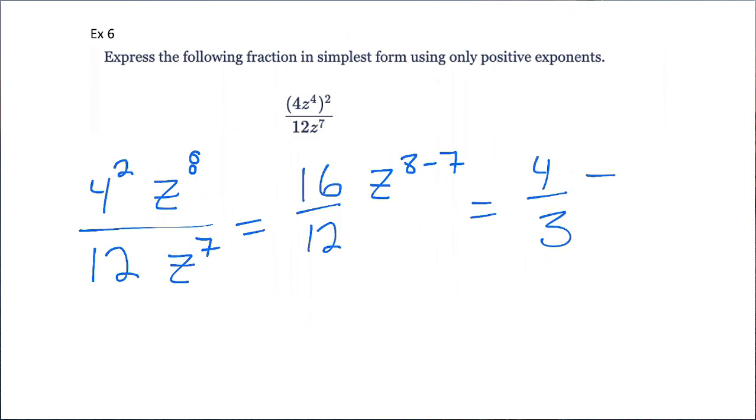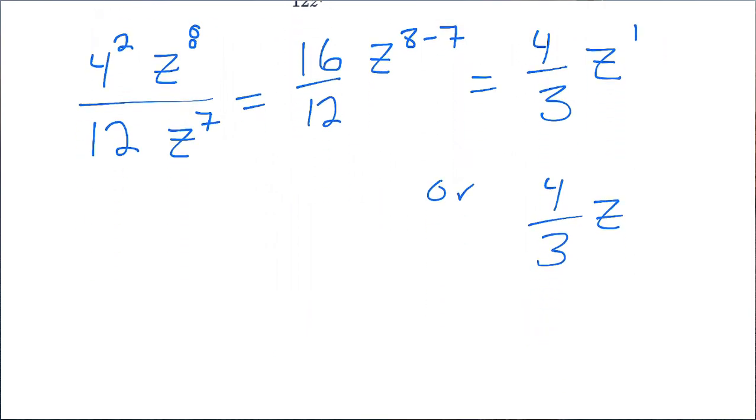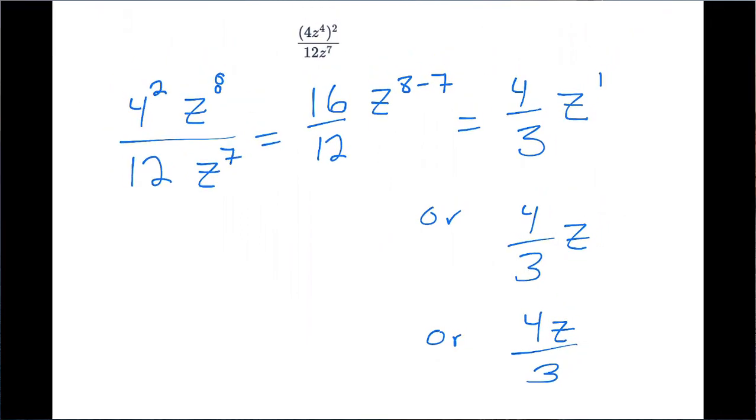So, that's 4 thirds z to the 1st. You could write it just as 4 thirds z. You actually could write this as 4z divided by 3. Any of those. I think DeltaMath would accept any of those.